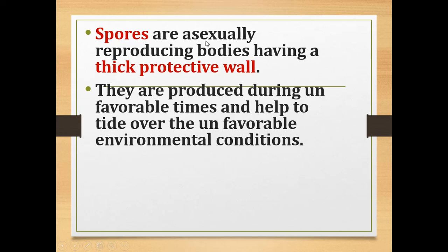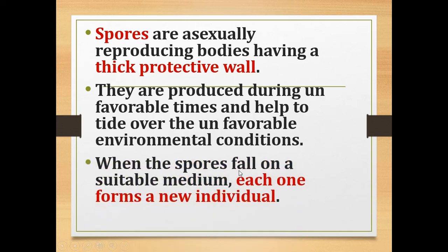Spores are asexually reproducing bodies which have a thick protective wall. They are produced during unfavorable times and help to tide over the unfavorable environmental conditions. When spores fall on a suitable medium, each spore forms a new individual when conditions become favorable.